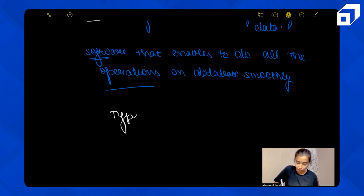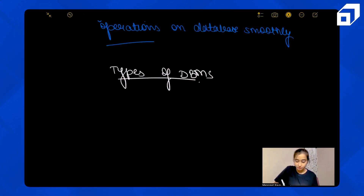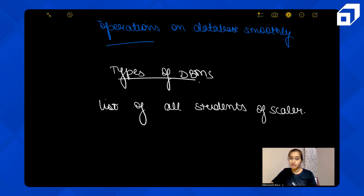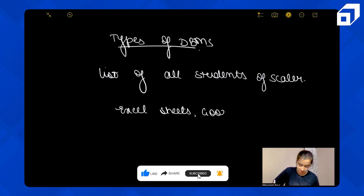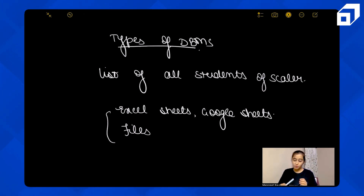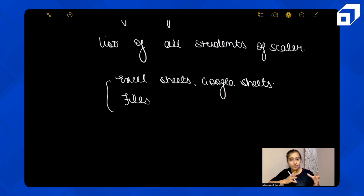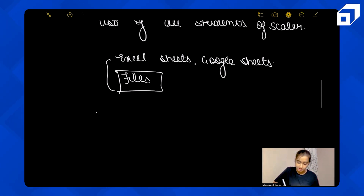Let's look at the different types of DBMS. If you don't know about DBMS and I give you a list of all students of Scalar, how will you store it? Some might say let's store it in Excel sheets, some in Google Sheets, some in files. These are methods to store data and can also be considered DBMS. The original way people stored data in computer systems was files, so the very first type of DBMS is file-based DBMS.